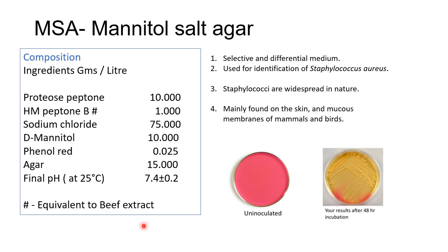The most widely used criterion for identification of pathogenic staphylococci is its ability to clot plasma. Staphylococci have the unique ability to grow at high salt concentrations — sodium chloride is 75 grams per liter in this media. Isolation of coagulase-positive staphylococci on phenol red mannitol agar supplemented with 7.5% NaCl was first studied by Chapman. The resulting Mannitol Salt Agar base is recommended for isolation of coagulase-positive staphylococci.